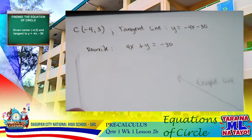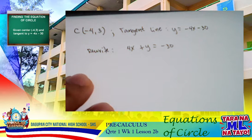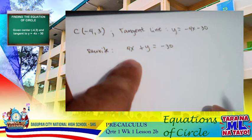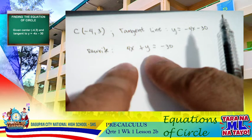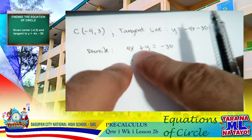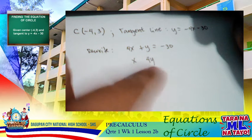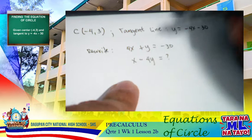From the given, we have the center at negative 4, 3, and the tangent line y equals negative 4x minus 30. If we rewrite this, it is 4x plus y equals negative 30. To find the perpendicular line, we interchange the numerical coefficients of x and y. So the coefficient of x becomes the coefficient of y and vice versa, followed by opposite signs.